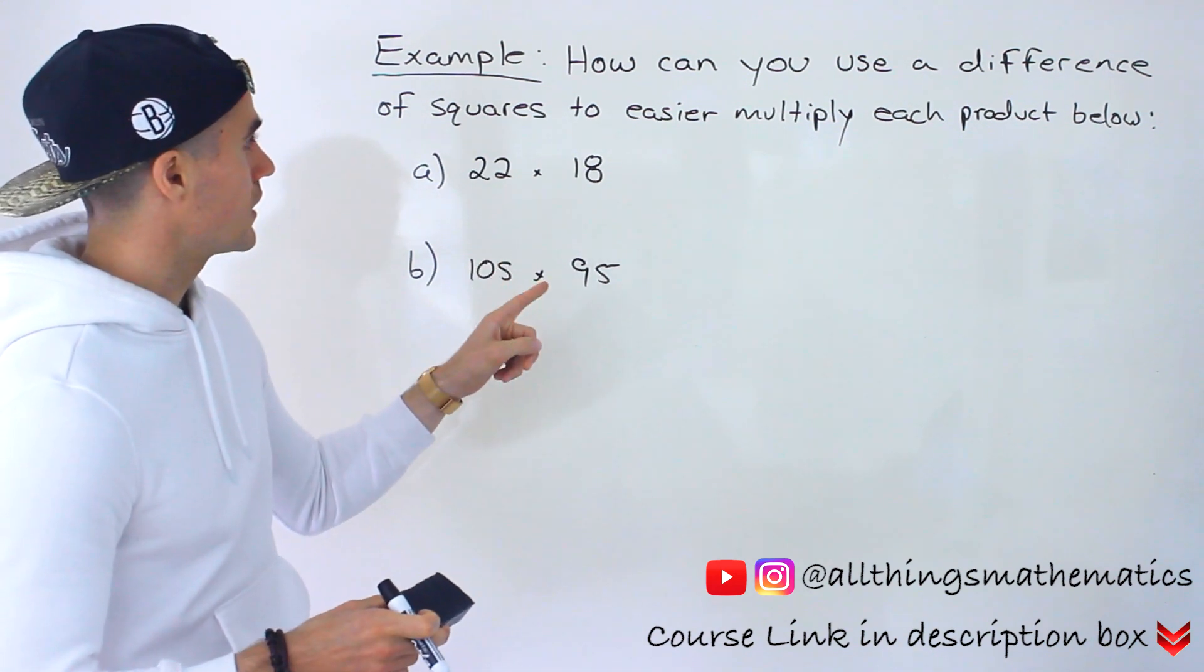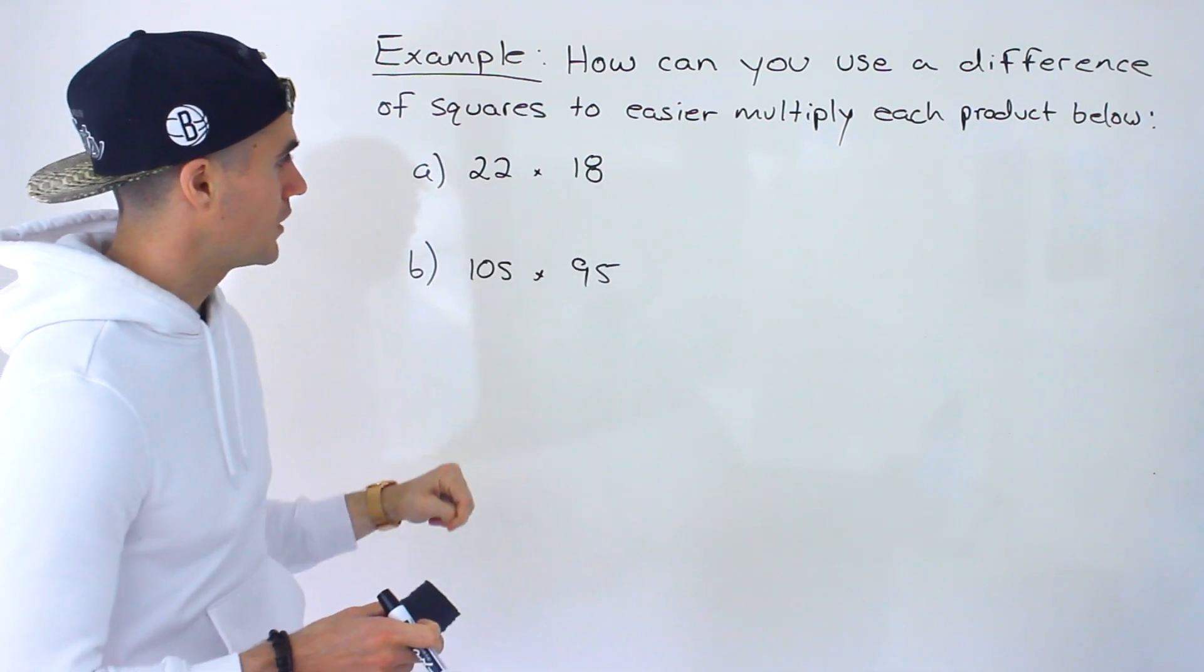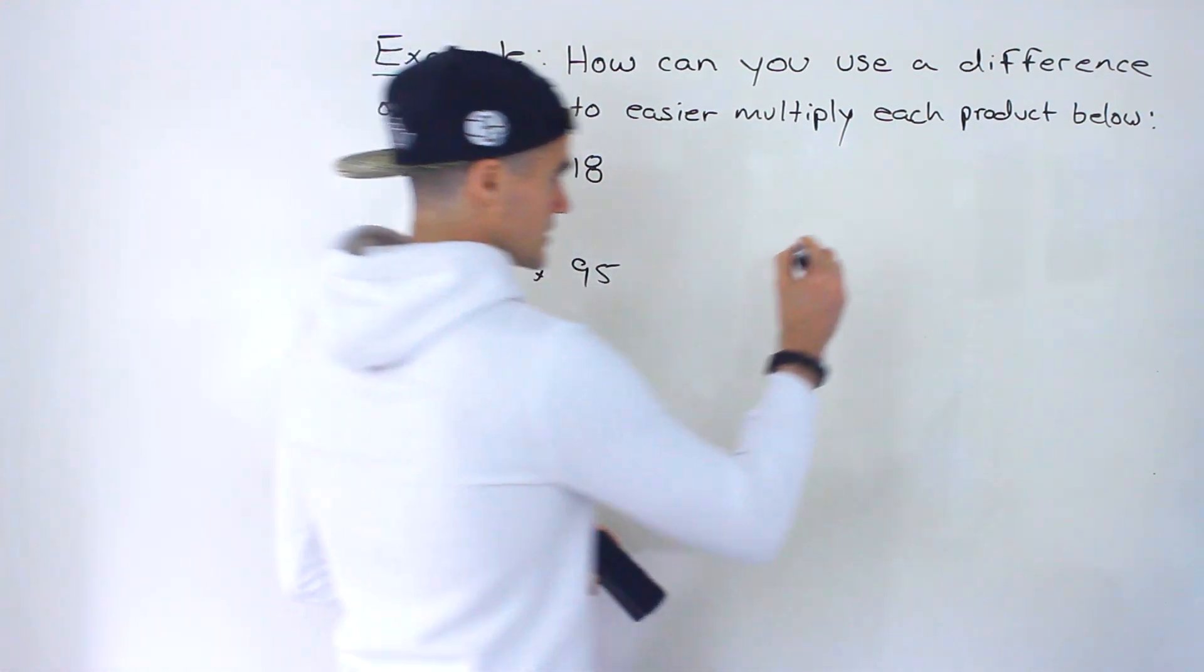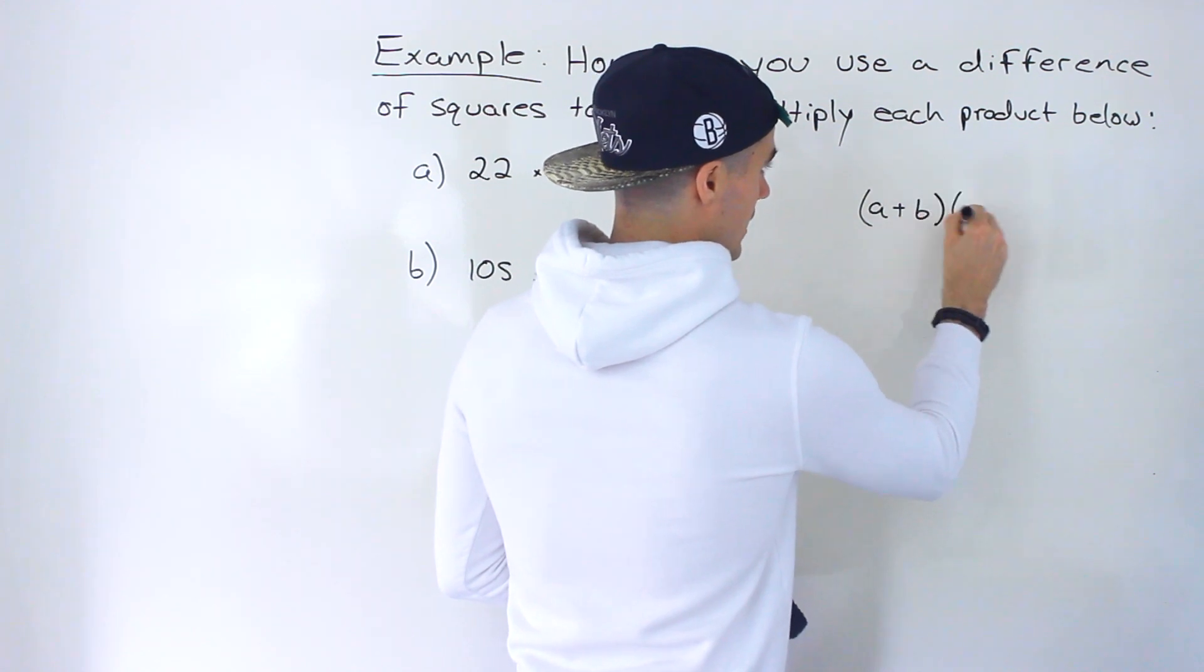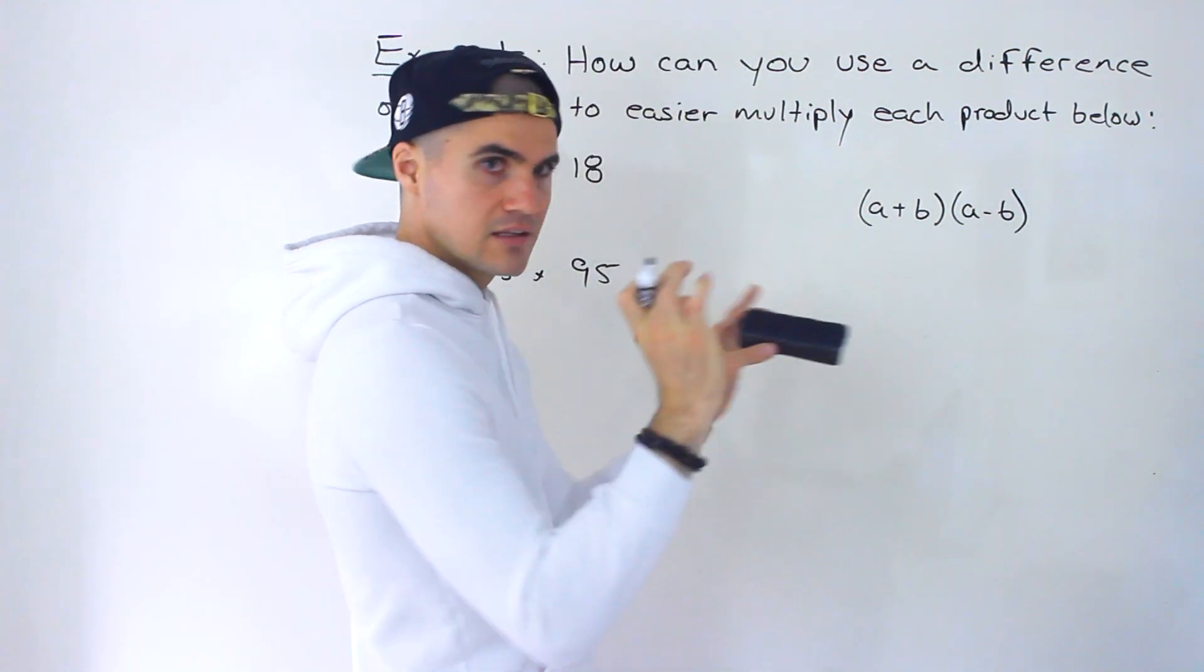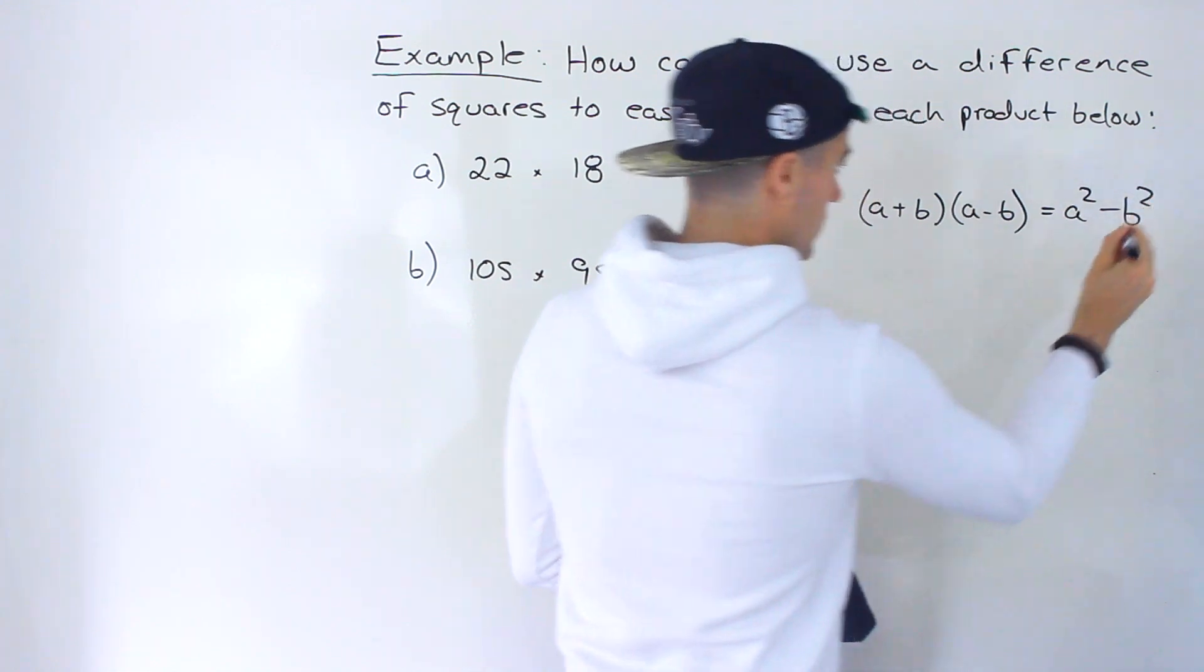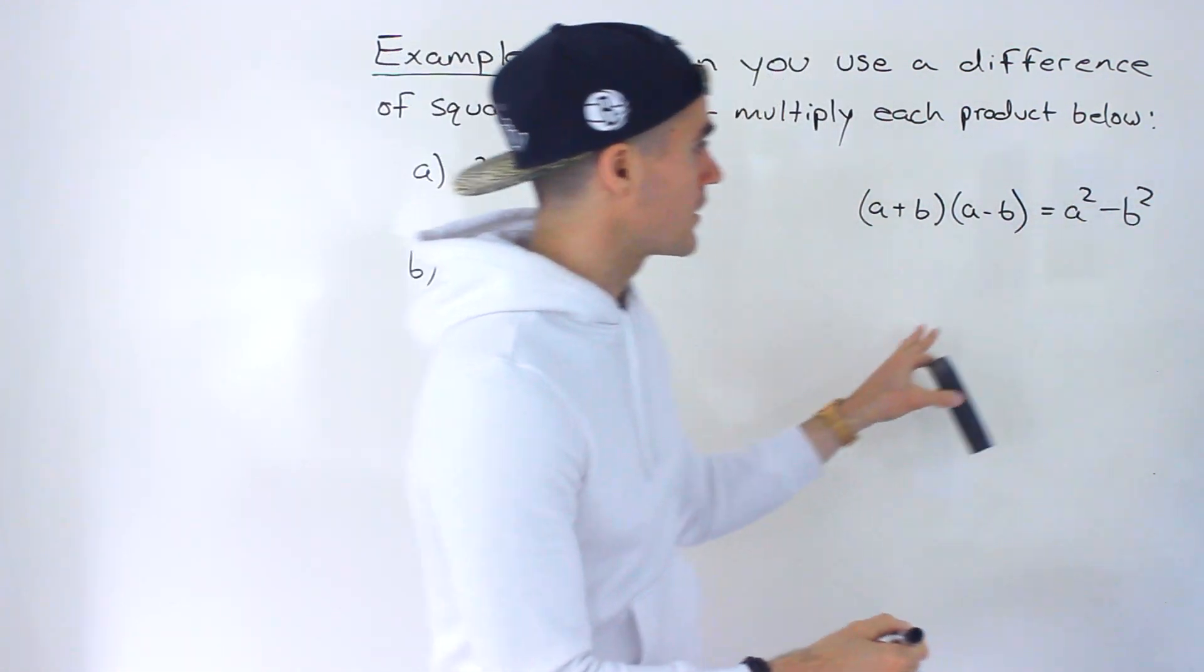So how can you use the difference of squares to easier multiply each of these products over here? You can directly go about it, that is one way. Now what is the difference of squares? If you remember that's when we have a plus b times a minus b and then when you expand all of that the middle terms they're going to cancel out and you're going to end up with a squared minus b squared. That's the formula for a difference of squares.